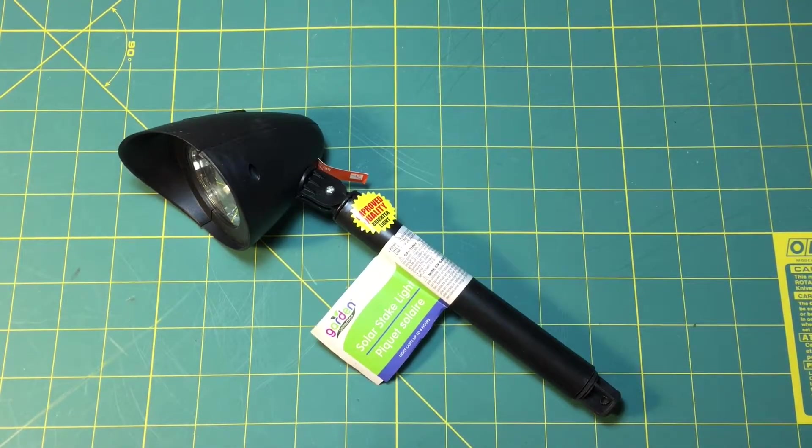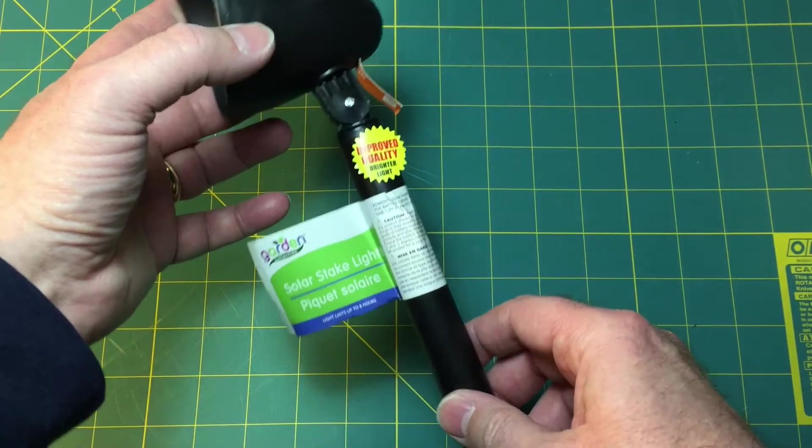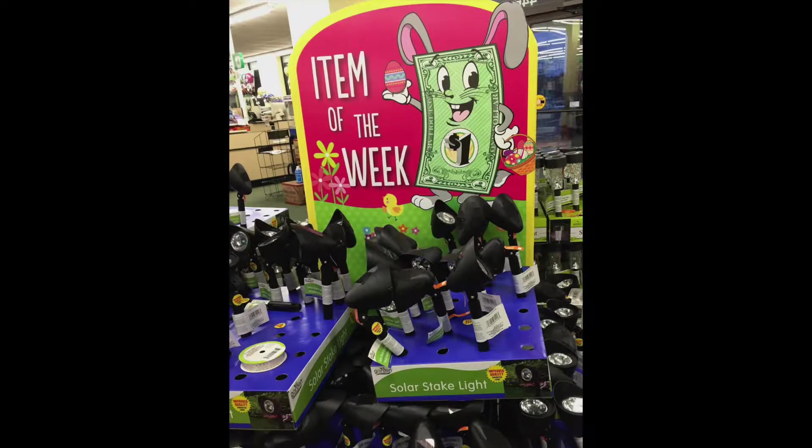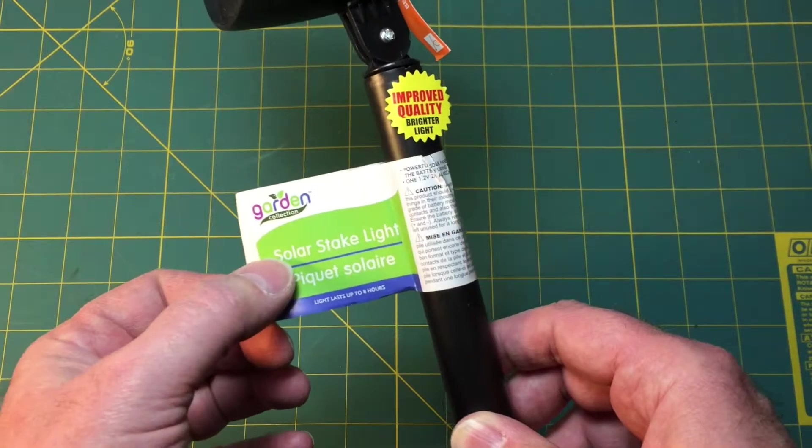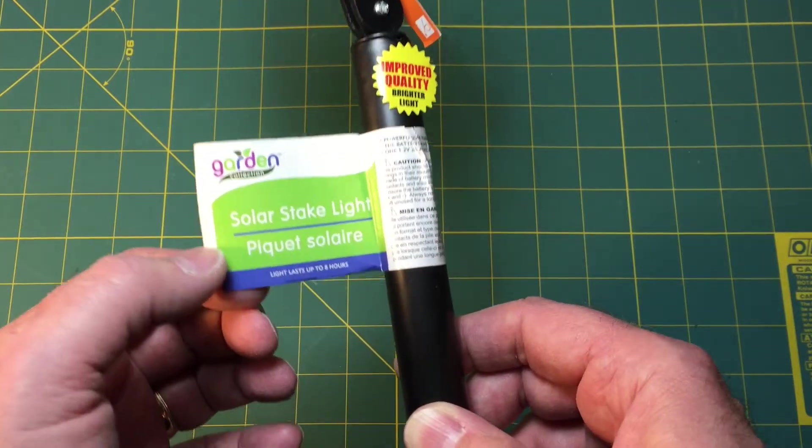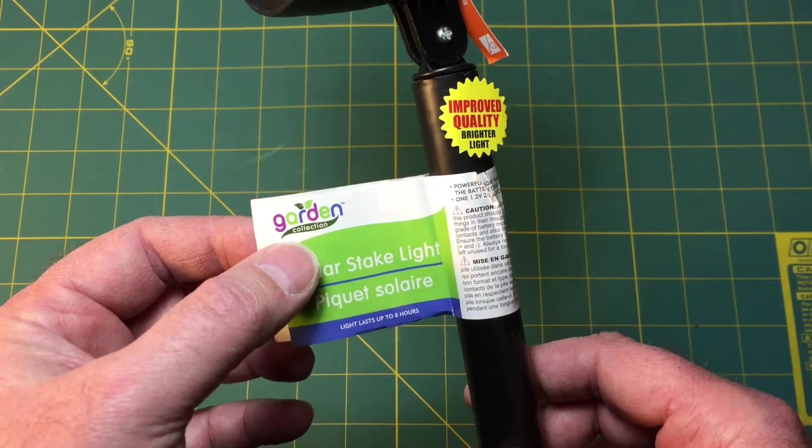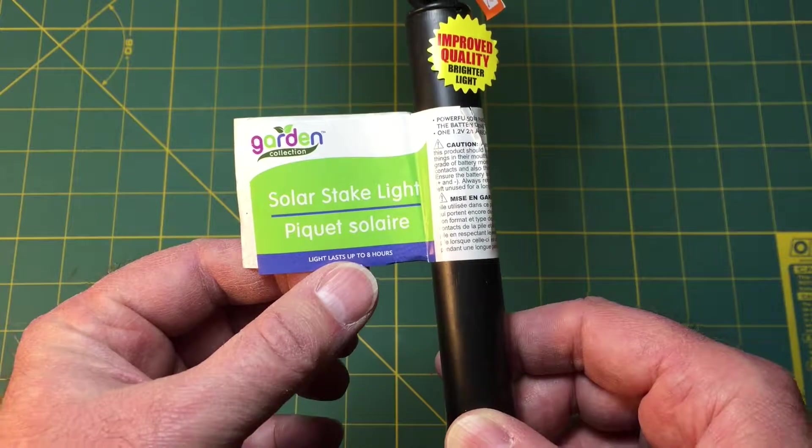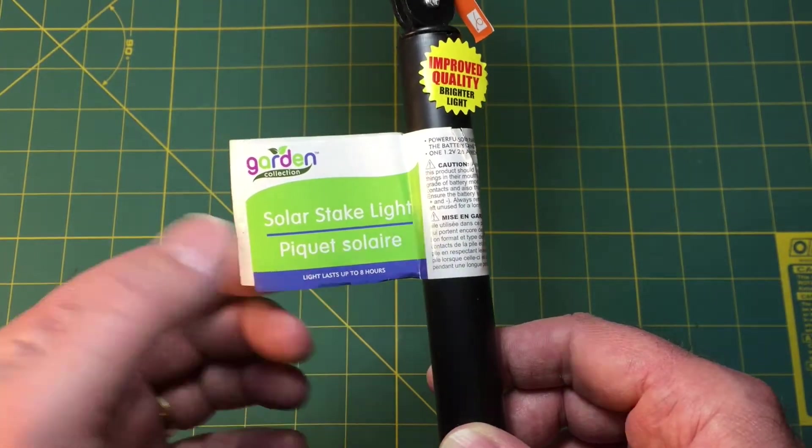Welcome to Network 13 and today instead of building something we're going to tear something apart. This is a solar stake light that I bought at my local dollar store today. It's in French being in the northeast we're not that far from our friends and neighbors up in Canada.